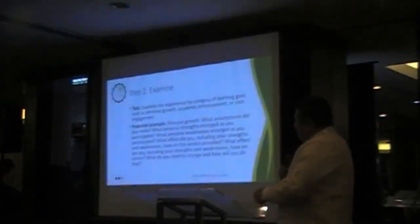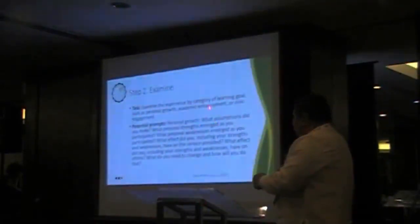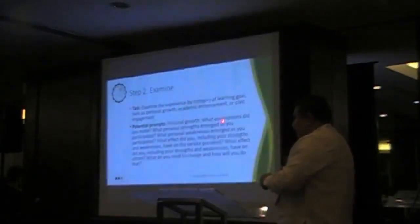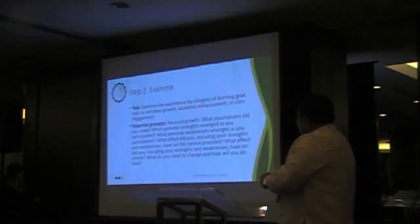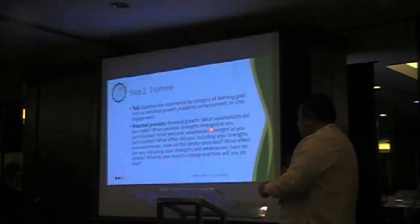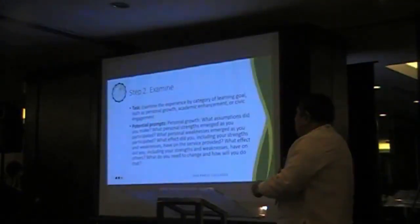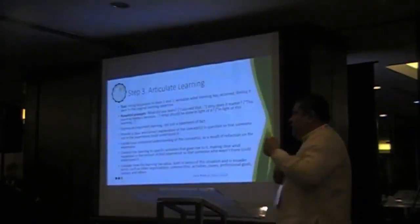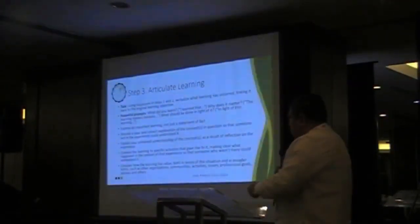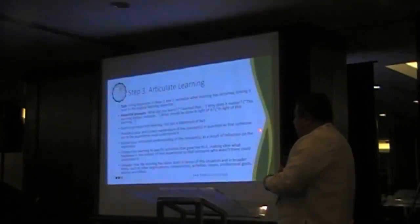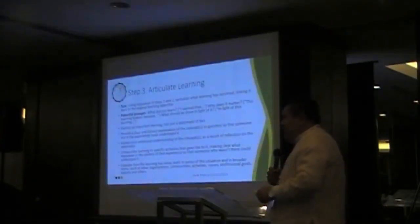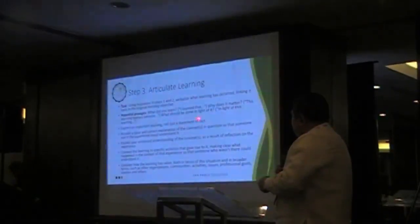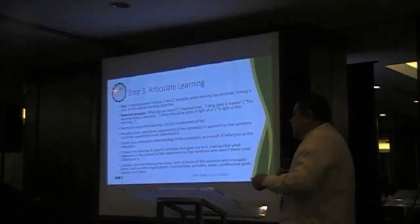The second step is examine. The task is for participants to examine their experience by category of learning goals such as personal growth — how did the experience help you grow? How does it connect with your academic performance or enhance your academic experience? And then civic engagement. Potential prompts could be: What assumptions did you make? What personal strengths emerged as you participated? What were the limitations? This connects the experiential component back to academic and civic learning goals.